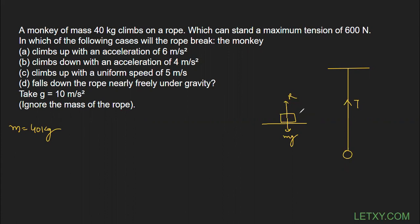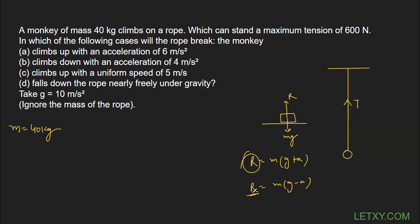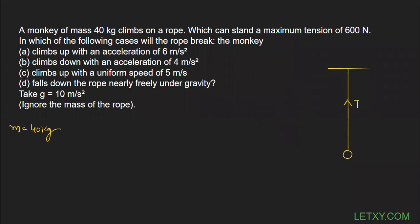Think of tension as the normal reaction. Recall the lift formulas, because the formulas here are exactly the same. If something is going upward with acceleration a, the normal reaction — replaced here by tension — is given by m(g + a). If something is going downward with acceleration a, it is m(g − a). The mass is 40 kg and the maximum tension is 600 newton.